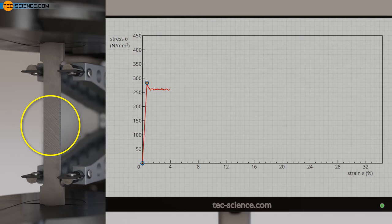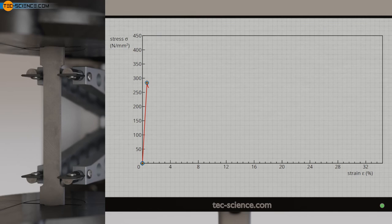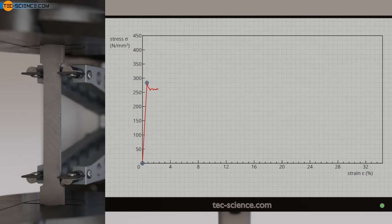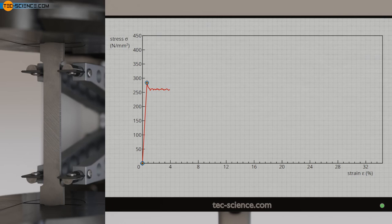In general stretcher strain marks are undesirable in forming technology because they result in an unsightly surface. The Lüter strain does not occur uniformly over the entire gauge length of the sample but gradually moves from top to bottom or vice versa. This can be seen during the tensile test by the successive Lüter bands, which only gradually cover the entire tensile specimen. The yield-point elongation is therefore an inhomogeneous plastic deformation.